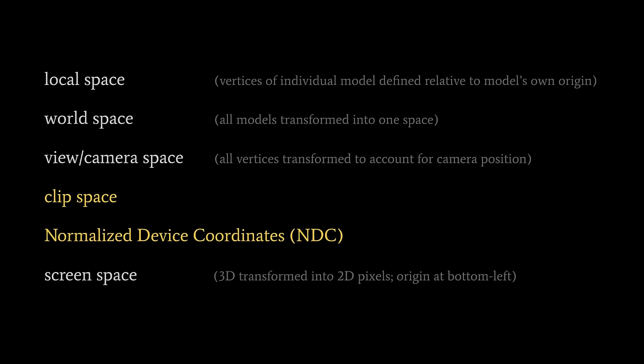In the process described earlier, some extra steps that OpenGL performs were glossed over. We could, in principle, go straight from view space to screen space, but in OpenGL, what actually happens is we go from view space to what's called clip space, then from clip space to what's called normalized device coordinates, and then out to screen space.